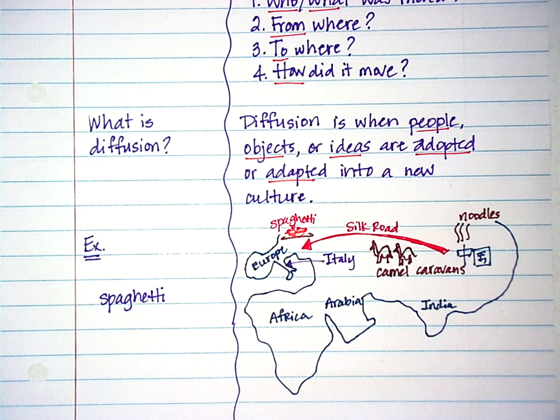For your homework tonight, you're going to be looking at the movement of Buddhism from where it started to where it went. How did it move? So Buddhism is going to be the who or what was moved for each of your examples for homework tonight. Okay. Good luck.